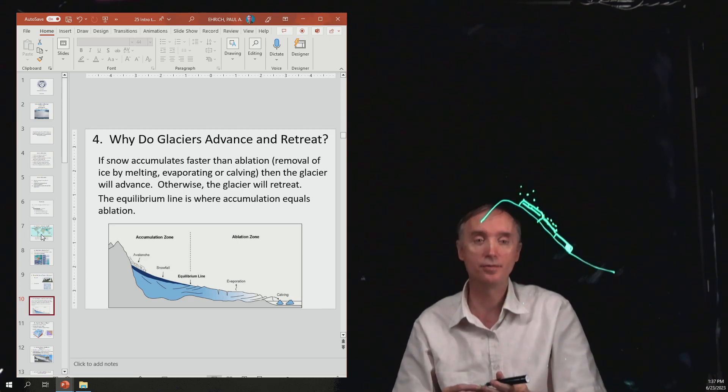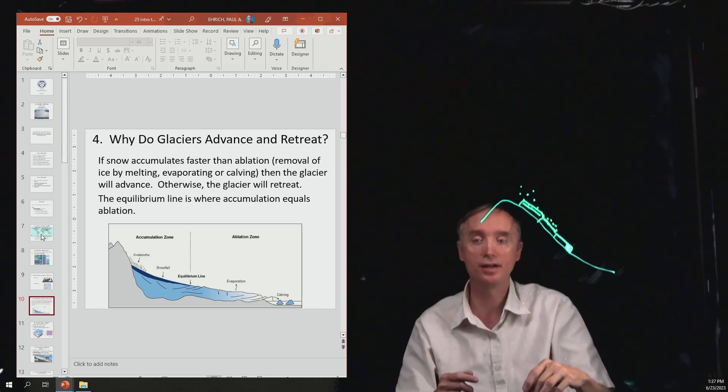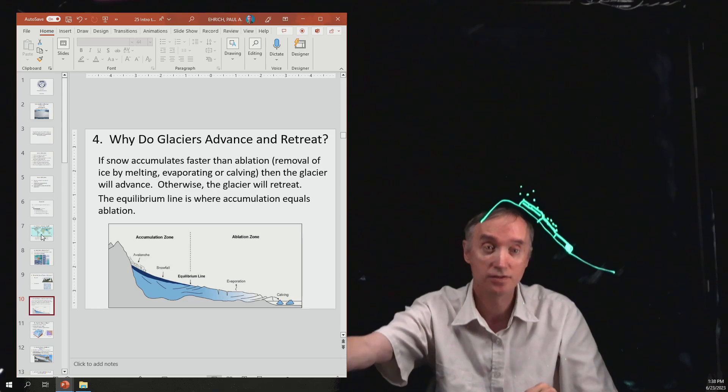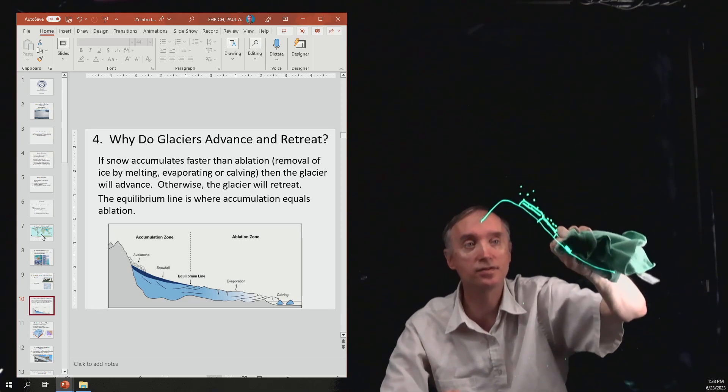Now that does not mean that the glacier is actually moving backwards. It's not going back up the hill against gravity. It just means that the glacier is disappearing.